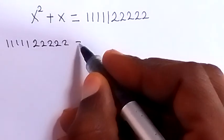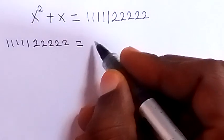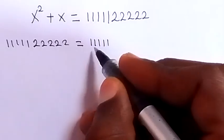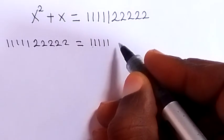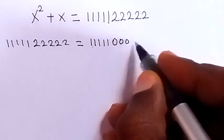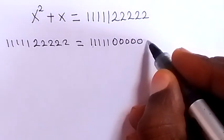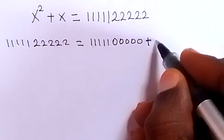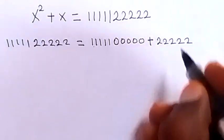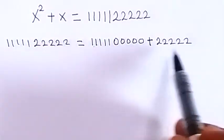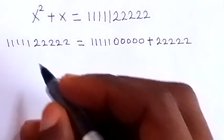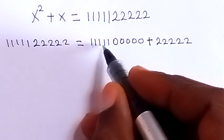We can separate the right-hand side and write it as 11111, which is five 1s, then 00000, which is five 0s, and then plus 22222, which is five 2s as well. So the right-hand side can be broken down into these components.